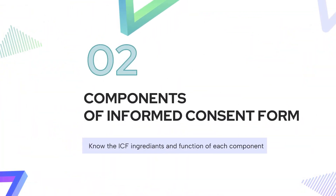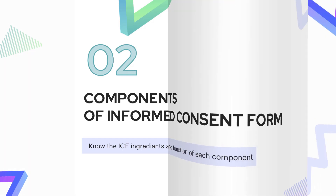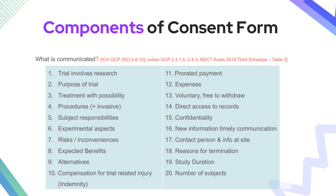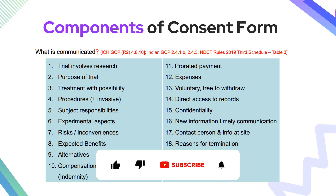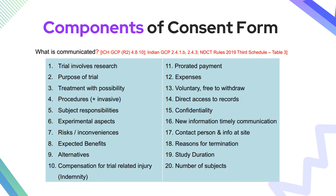Now let us understand what exactly the informed consent form is and what components are involved. Whenever you see an informed consent form, there are 20 parameters which must be included. First and foremost, there will be a statement which clearly describes that this particular clinical trial involves research.